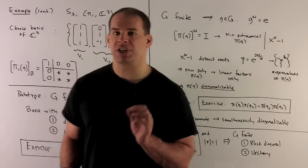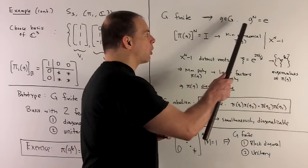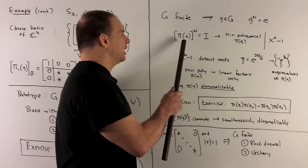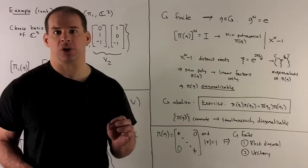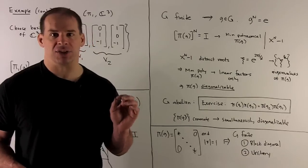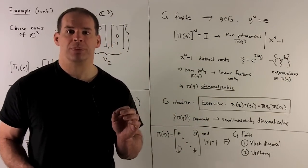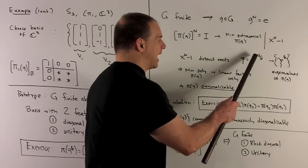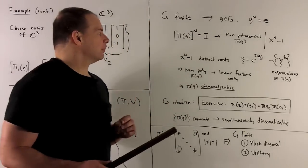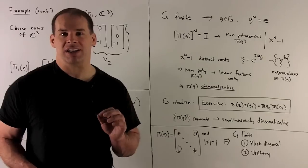To make use of this, let's consider the fact that G is finite. We'll pick an element g — since we're finite, g to some power n is going to be equal to the identity. We apply π to both sides, and out comes the matrix π(g) raised to the nth power equals the identity matrix. That means the minimal polynomial of π(g) divides xⁿ−1. Now xⁿ−1 has distinct roots — the nth roots of unity e^{2πi/n} — so the minimal polynomial for π(g) factors into distinct linear factors, meaning π(g) is a diagonalizable matrix.